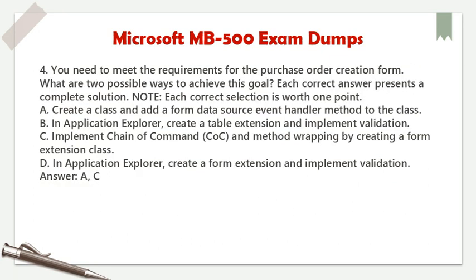Question 4. You need to meet the requirements for the purchase order creation form. What are two possible ways to achieve this goal? Each correct answer presents a complete solution. A. Create a class and add a form data source event handler method to the class. B. In Application Explorer, create a table extension and implement validation. C. Implement chain of command (COC) and method wrapping by creating a form extension class. D. In Application Explorer, create a form extension and implement validation. Answer: A, C.